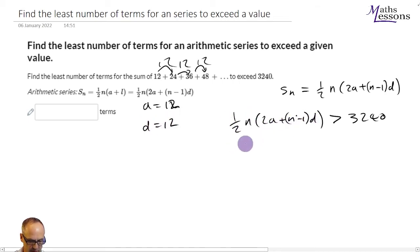So let's put that into our formula. So we've got a half times n times 2a, 2 times 12 is 24, plus n minus 1, we don't know n, times d, the common difference, 12, is greater than 3,240.